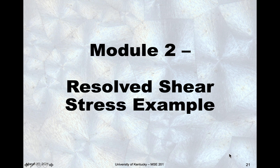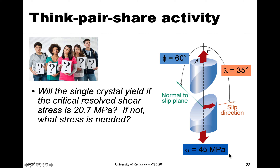In this module we're going to take what we just learned about resolved and critical resolved shear stress and work an example. Our example is a single crystal of a material that has a critical resolved shear stress of 20.7 megapascals. It gives us a tensile stress of 45 megapascals and two angles — 35 degrees between the slip direction and the tensile axis, and 60 degrees between the slip plane and the cross-sectional area.